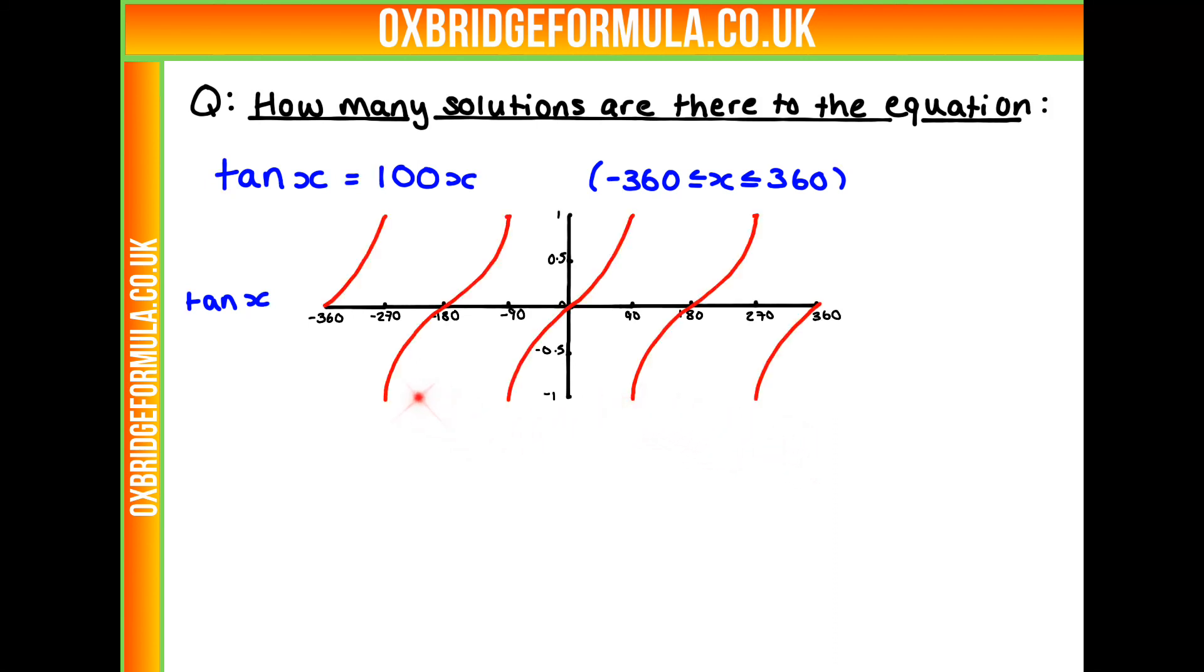It's going to look something like this. So we have lines that are going to extend infinitely, basically. And they're going to cross at minus 360, minus 180, zero, 180, and 360.